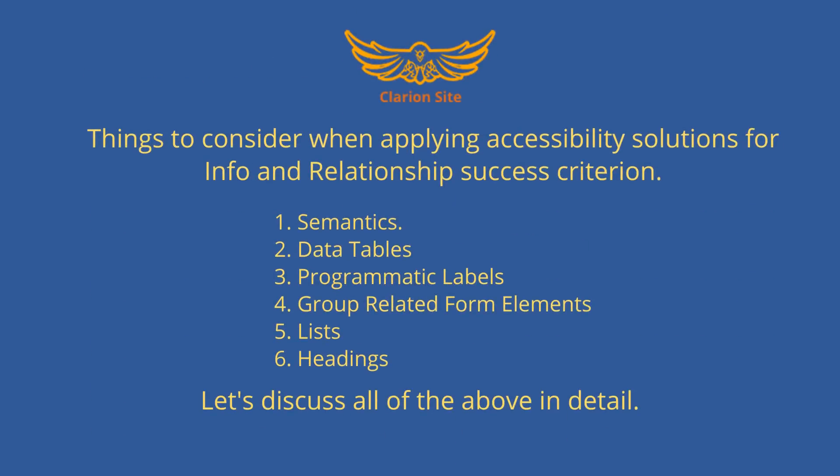Things to consider when applying accessibility solutions for the Info and Relationships success criterion: Number 1 — Semantics. Number 2 — Data tables. Number 3 — Programmatic labels. Number 4 — Group related form elements. Number 5 — Lists. Number 6 — Headings. Let's discuss all of the above in detail.